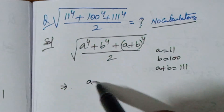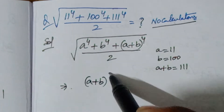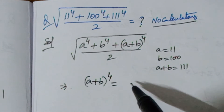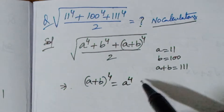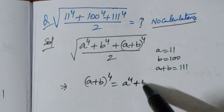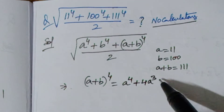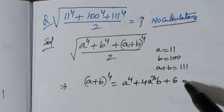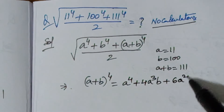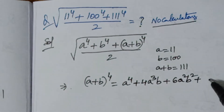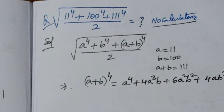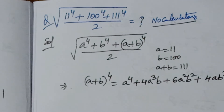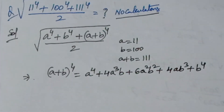First I am writing the formula: (a + b) to the power of 4 is equal to a⁴ + 4a³b + 6a²b² + 4ab³ + b⁴. This is the formula for (a + b) whole to the power of 4, and by using this formula we are going to continue.